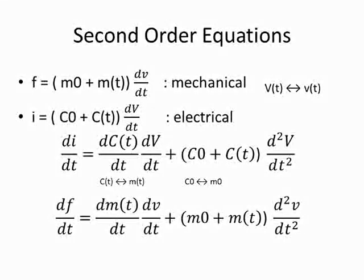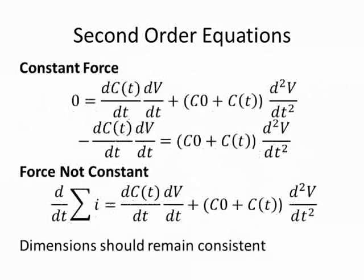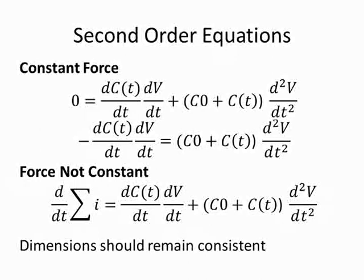Therefore, the equivalence and the analogy is preserved under transformation to a higher order. This is what I wanted to prove. From this point forward, we will work primarily with the second order equations from the electrical energy domain. If in the mechanical domain we have constant force, then when we take the derivative of current in the electrical domain, the result will be zero. And we will have a situation where we have two terms which are equal to each other and opposite in polarity.